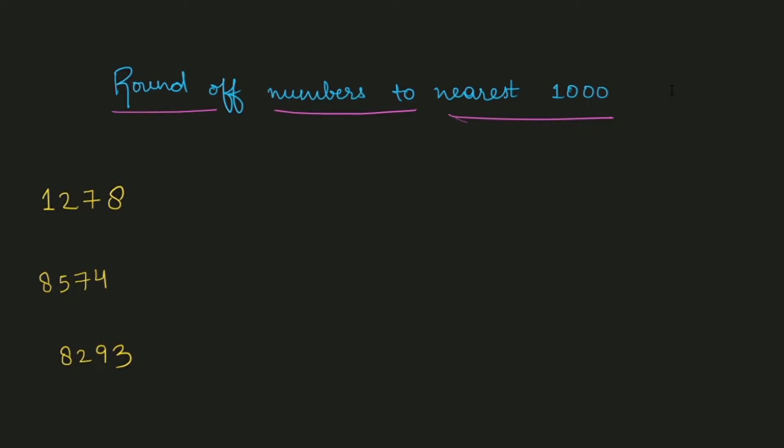In today's video we will learn to round off to the nearest thousand place. As you can see, I've already written three numbers. First of all, you have to underline the digit on the thousands place. So in the first number the digit on the thousands place is 1, in the next number it's 8, and again it's 8.